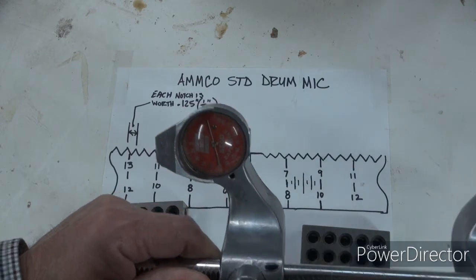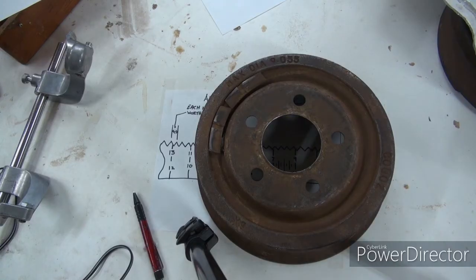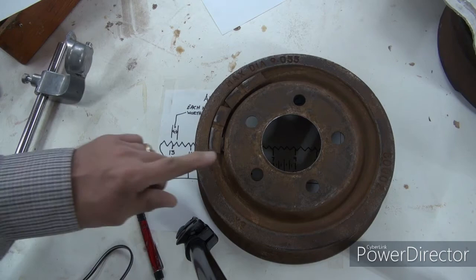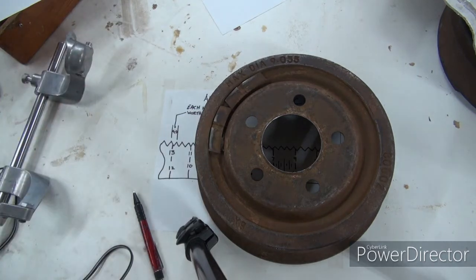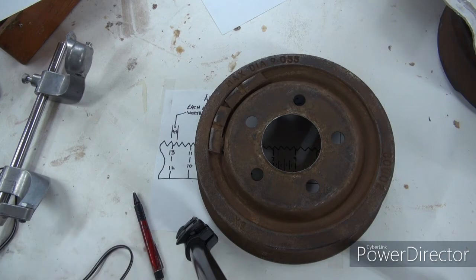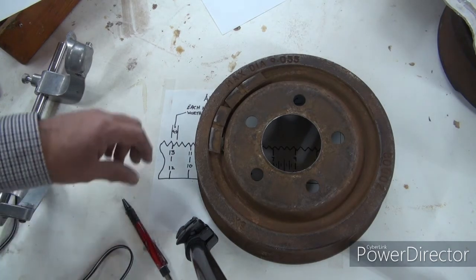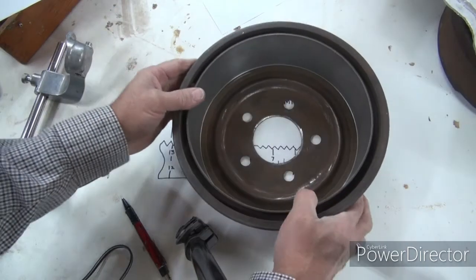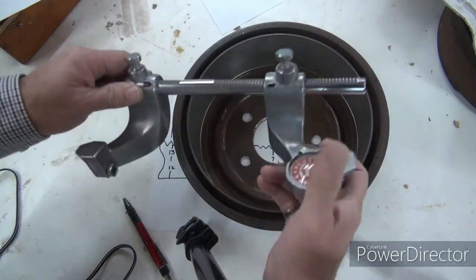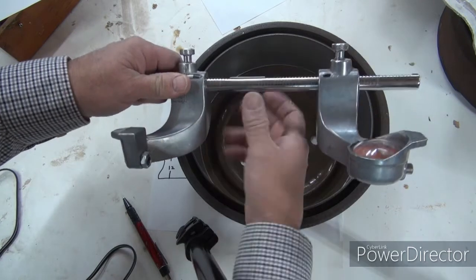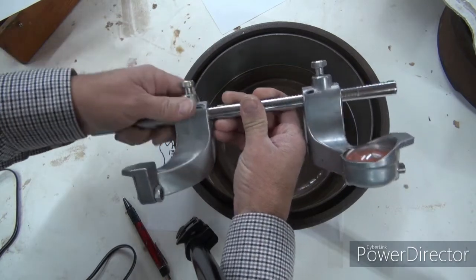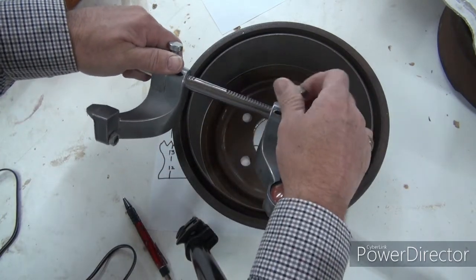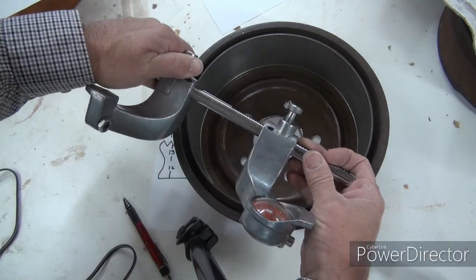Here we have a standard drum. You can see on the outside the maximum diameter is 9.055. That's max. Any bigger than that we got to discard this thing. We know it's a nine-inch drum, so we're going to set this guy at nine inches. I'm looking for that nine. Set it on the nine. Here's my nine on this side. I just want to line that nine up right here with the edge of the arm.